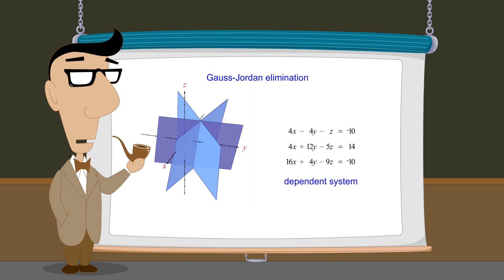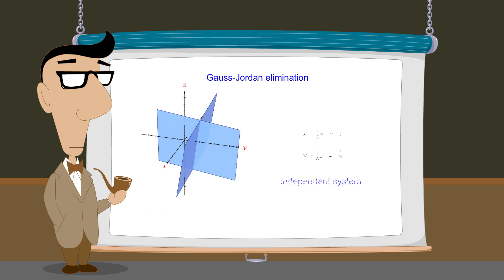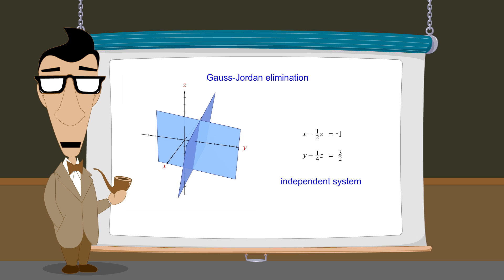If the system is dependent, once the system is in reduced row echelon form the result will be an independent system of fewer equations from which the solution set can be easily determined. So let's look at a few examples of what happens when Gauss-Jordan elimination is performed on a dependent system of equations.